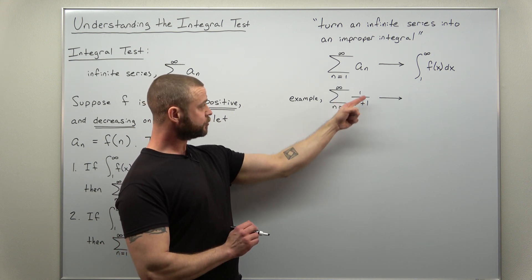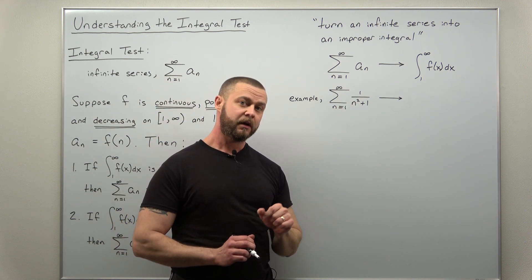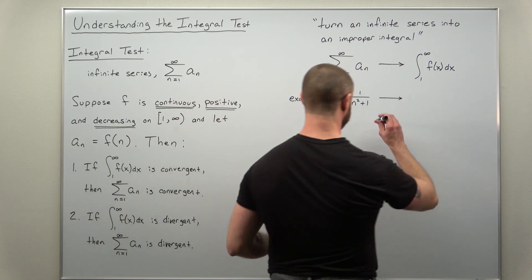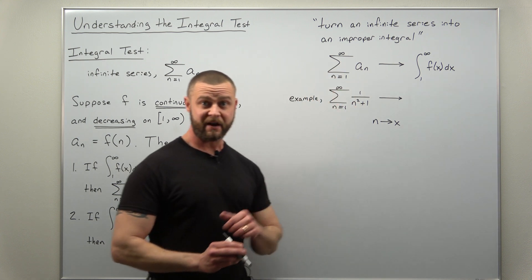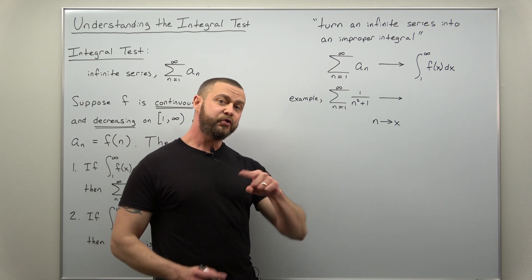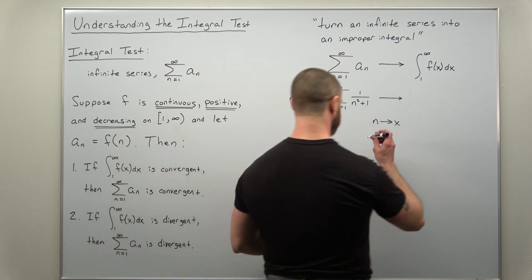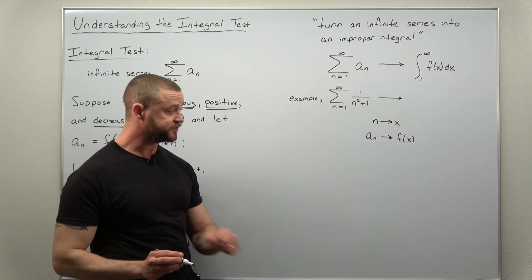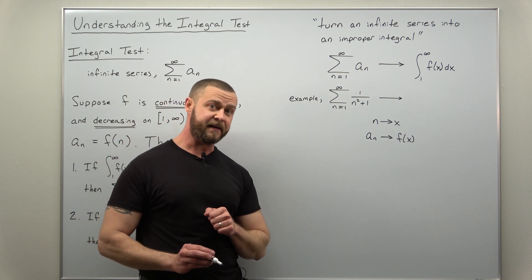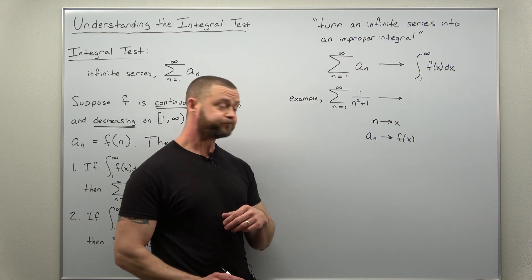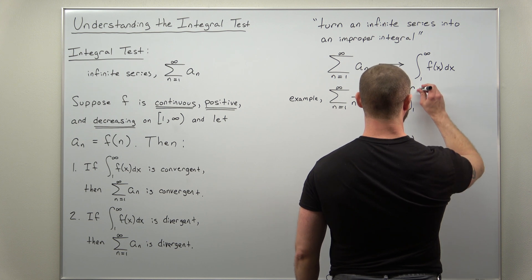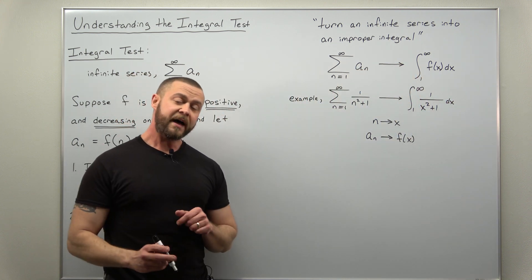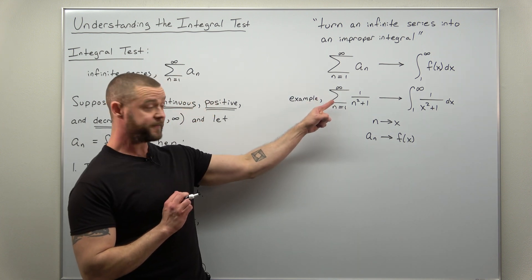Let's say we have an example where the general term a_sub_n is 1 over n squared plus 1. The simple way I explain this in my Calc 2 course: we just replace n with x. So 1 over n squared plus 1 converts to 1 over x squared plus 1. The discrete function a_sub_n, which takes integer values, converts to a continuous function f of x. The improper integral we convert to is the improper integral from 1 to infinity of 1 over x squared plus 1.